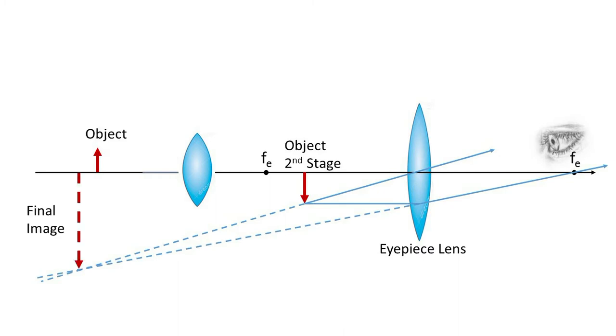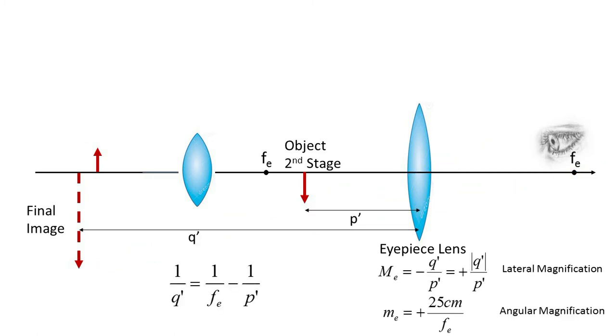Thus, the final image is virtual, enlarged, and inverted. The final image position relative to the eyepiece lens is defined as q prime and is calculated by application of the thin lens formula to the second stage of the microscope.